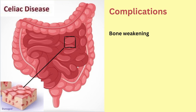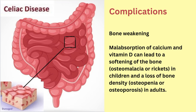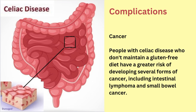The next complication is bone weakening. Malabsorption of calcium and vitamin D can lead to a softening of the bone called osteomalacia, or rickets in children, and a loss of bone density called osteopenia or osteoporosis in adults. The next complication is cancer. People with celiac disease who don't maintain a gluten-free diet have a greater risk of developing several forms of cancer including intestinal lymphoma and small bowel cancer.